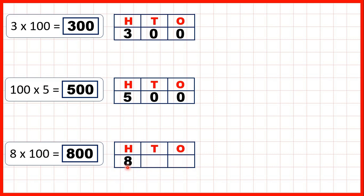The digit moves two squares — or two place values — to the left, so we can put two zeros on the end to get our answer. Now the reason why the digits move two squares to the left when we multiply by 100 is because multiplying by 100 is like multiplying by 10 and then by 10 again, because 10 times 10 is 100.